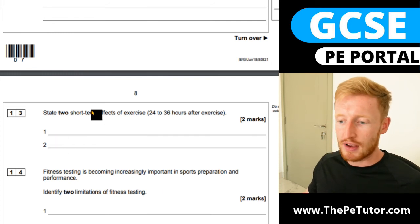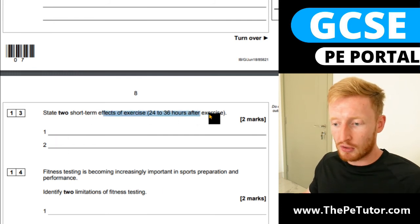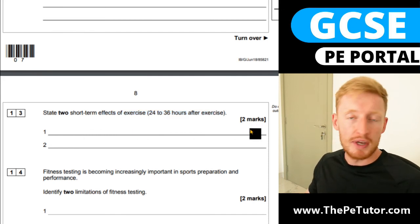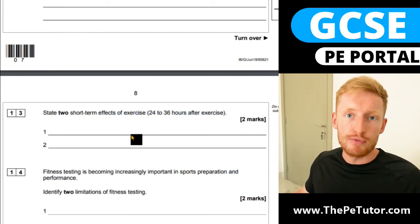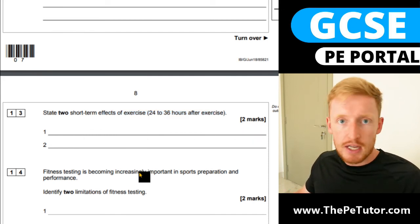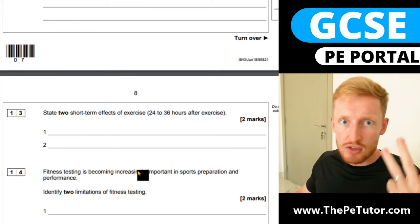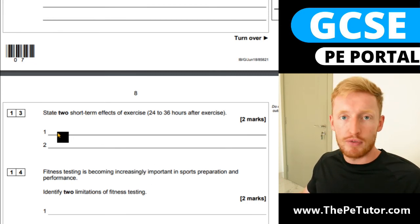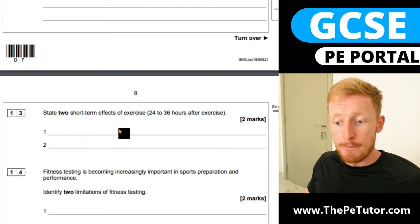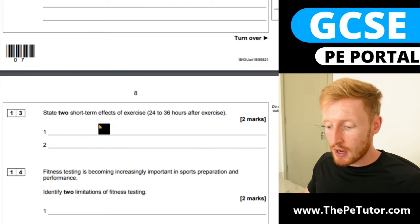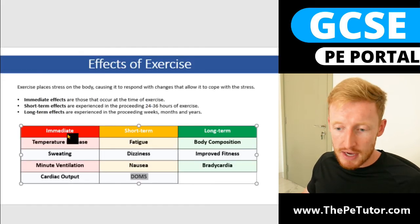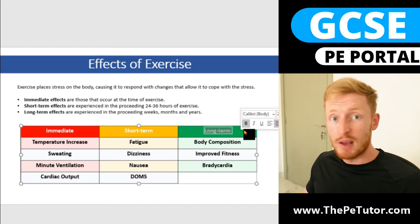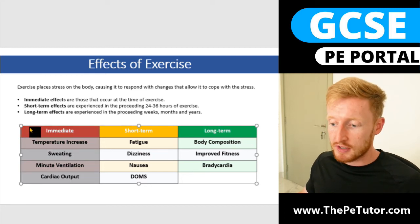So the question states: 'State two short-term effects of exercise 24 to 36 hours after exercise.' For the full two marks, we could use any of the four we just discussed — fatigue, tiredness, aches, pains, nausea, or delayed onset muscle soreness. Any one of those and you'd be picking up the mark. This could however be asking for the immediate effects or the longer term adaptations, in which case we would just pick one of the other categories.